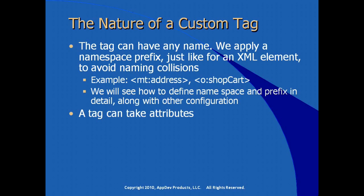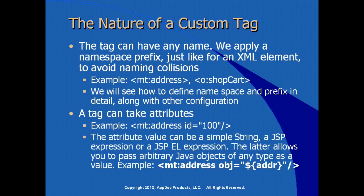A custom tag can take attributes just like any other JSP tag. For example, our address tag could be defined to take an attribute called 'id'. The attribute can be a simple string, a JSP expression, or a JSP EL expression. The latter option allows you to pass arbitrary complex Java objects of any type as a value. Here in the address tag, the attribute named 'obj' is used to pass a complex object instance named 'addr' using the expression language.